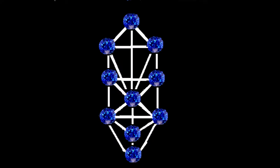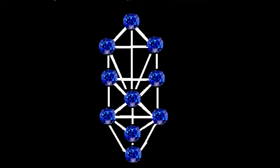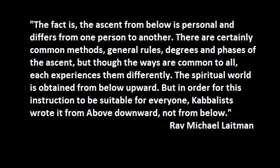We will buck the traditional way of teaching and ascend up the Tree of Life starting with Malkuth, also known as kingdom, just as we have with almost all of our other systems. Rav Michael Leitman explains: 'The fact is, the ascent from below is personal and differs from one person to another. There are certainly common methods, general rules, degrees, and phases of the ascent. But though the ways are common to all, each experiences them differently. The spiritual world is obtained from below upward. But in order for this instruction to be suitable for everyone, Kabbalists wrote it from above downward, not from below.'